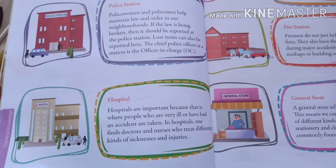We live together because we need each other's help. Can you imagine how difficult it would be to live all alone? There are places in most neighborhoods that serve important needs. Now that you are older, you should learn where these are located in your neighborhood. These are the places located near your locality, near your house, and they are very helpful to us whenever we need them.